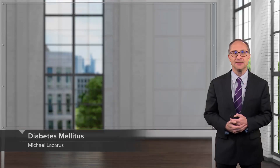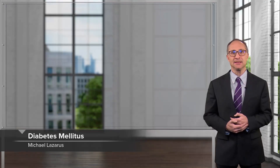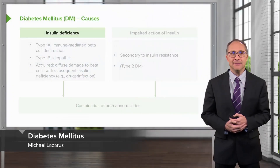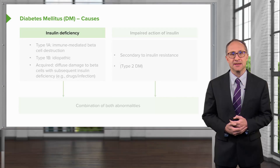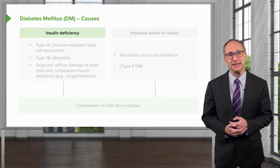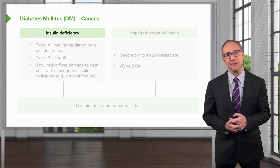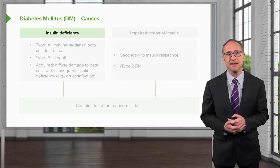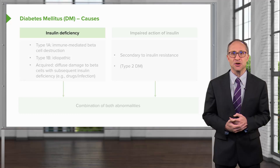In these lectures, we're going to talk about diabetes mellitus. Diabetes mellitus can be defined as a chronic metabolic disease characterized by elevated plasma glucose.